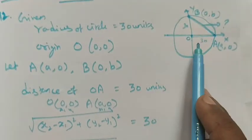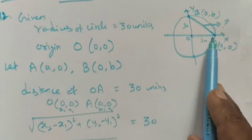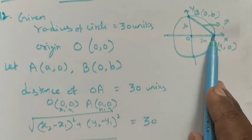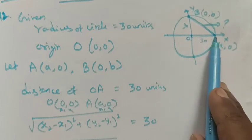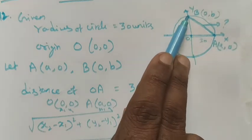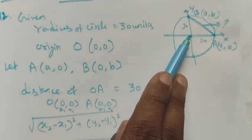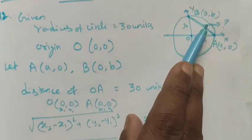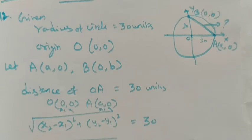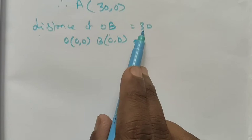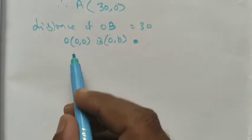So point A is (30, 0) and point B is (0, 30). Now we find the distance OB. O is the origin point.